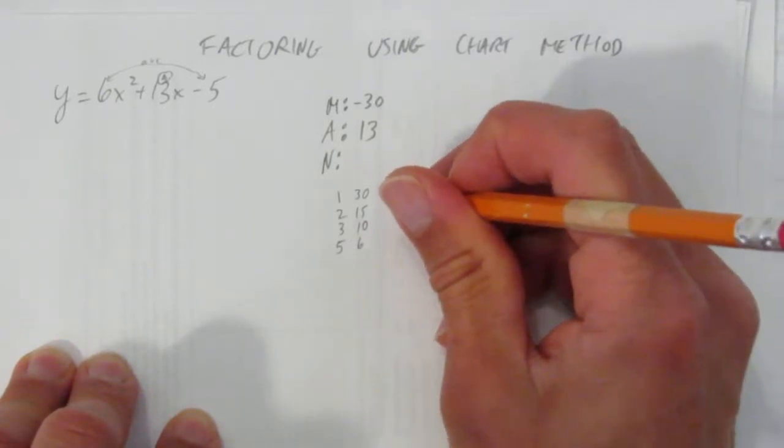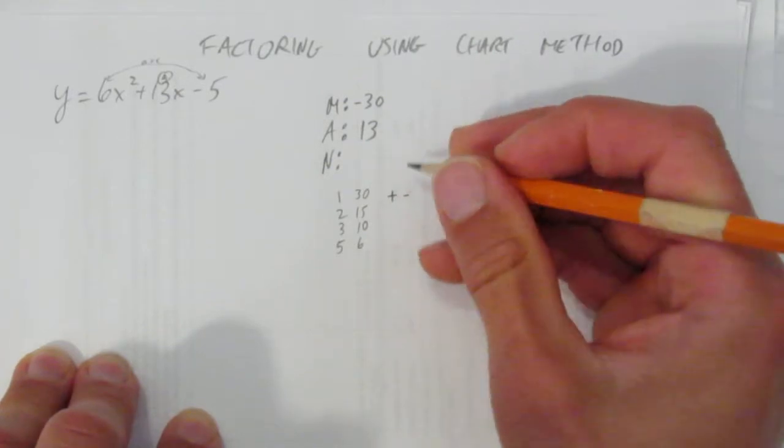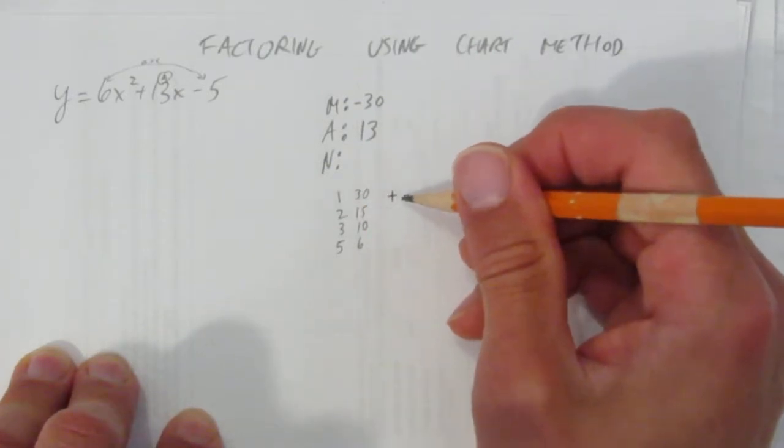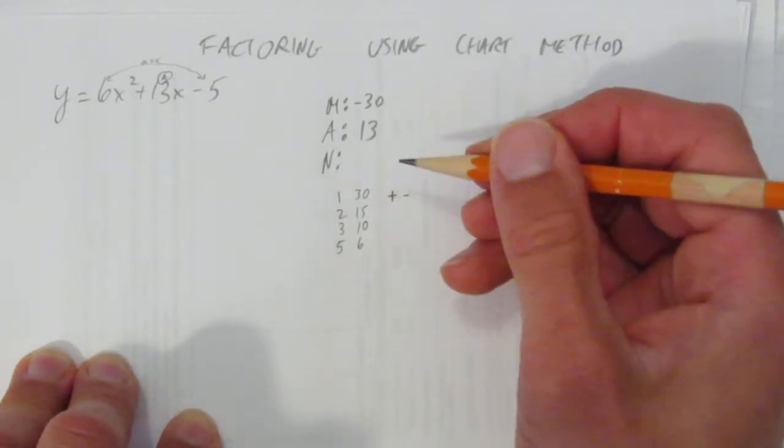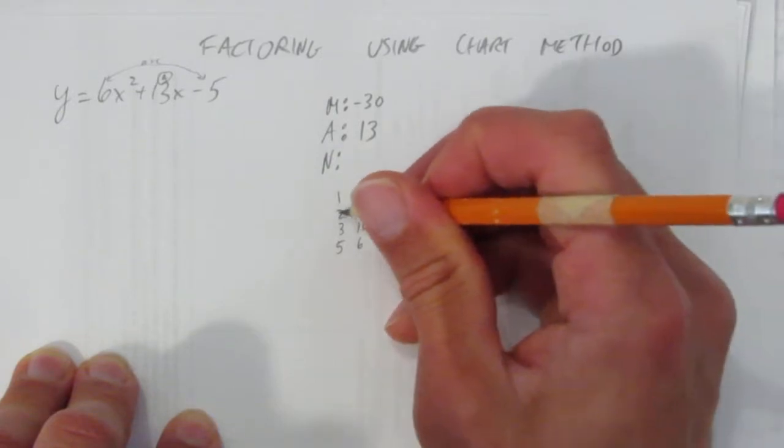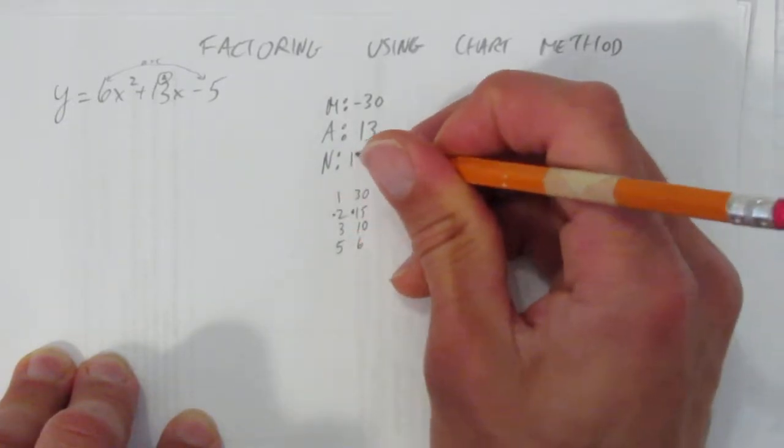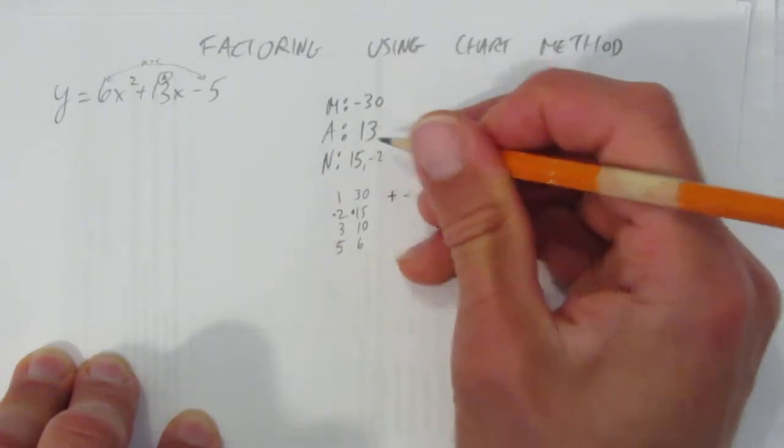Except it's got to be a negative. So you know you need a plus and a minus. Now you just have to pick the pair here where if you make one positive, one negative, it multiplies to negative 30 and adds to 13. Hopefully you can see that's obviously this one. Plus 15 and minus 2. Those will multiply to negative 30 and add to positive 13.